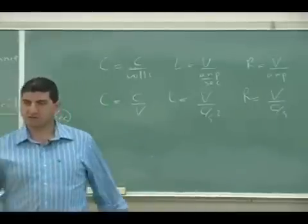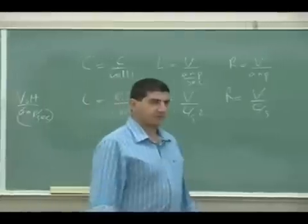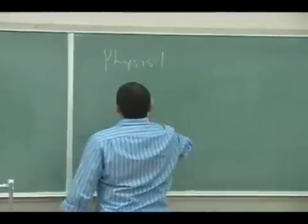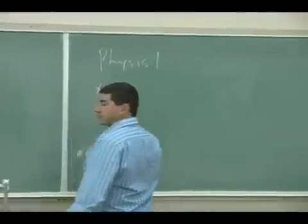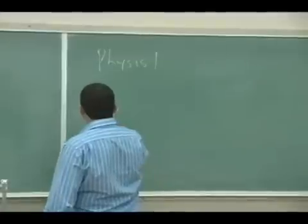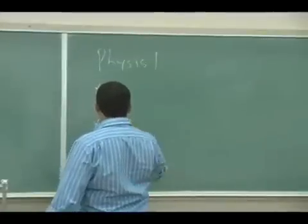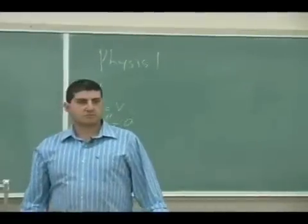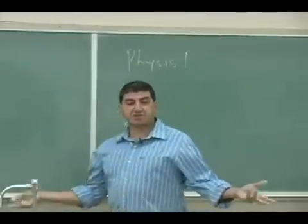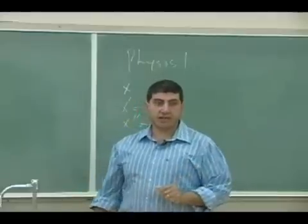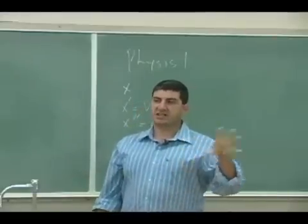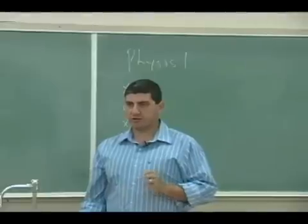In Physics 1, the variable is x, its derivative is velocity, and its second derivative is acceleration. The third derivative of acceleration has no real physical meaning — there's nothing that depends on the derivative of acceleration in terms of force.